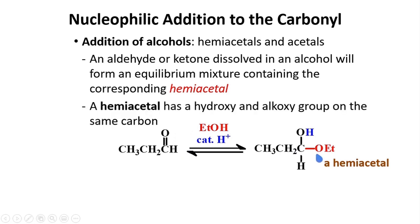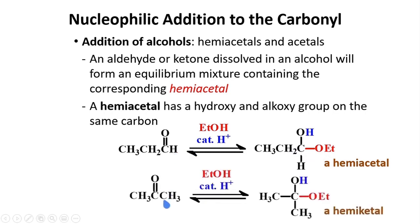A hemiacetal has a hydroxy group and an alkoxy group attached to the same carbon. In this example, I use an aldehyde. What about if you use a ketone? An example here is acetone. Using the same condition, you will get a carbon attached to an ethoxy group and a hydroxy group. A term used in older literature is hemiketal to describe this type of compound. Ketal means that this compound came from a ketone.